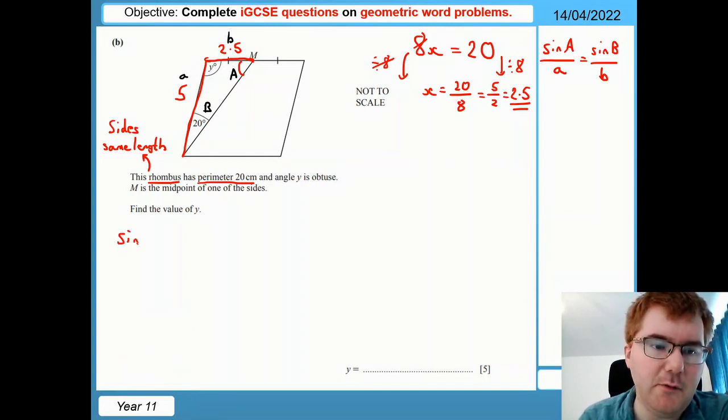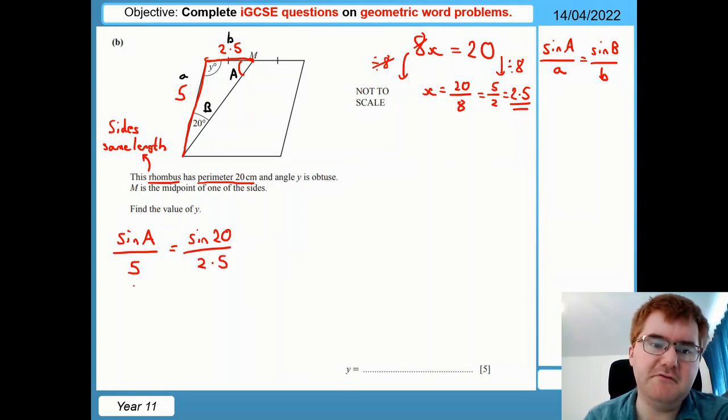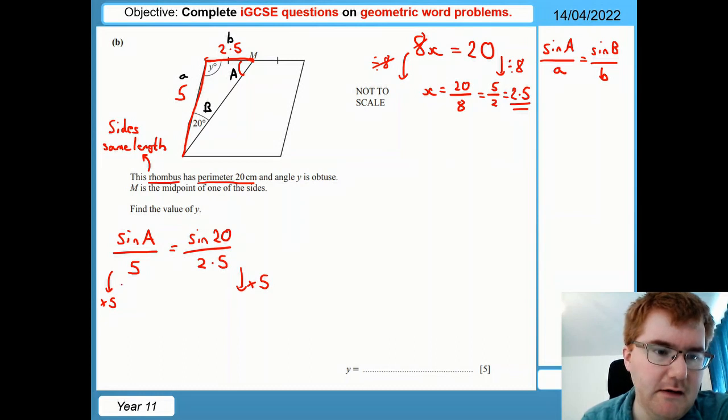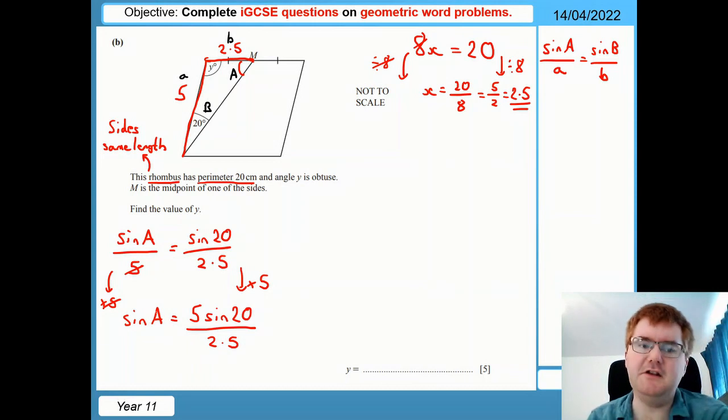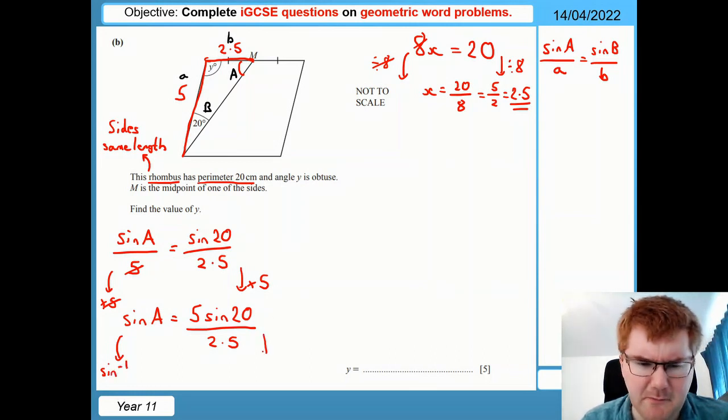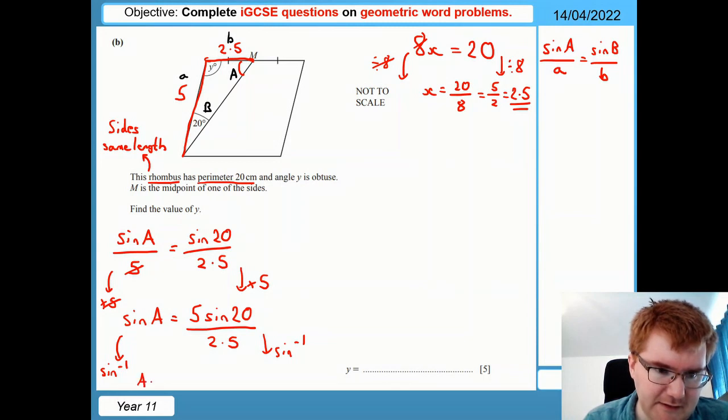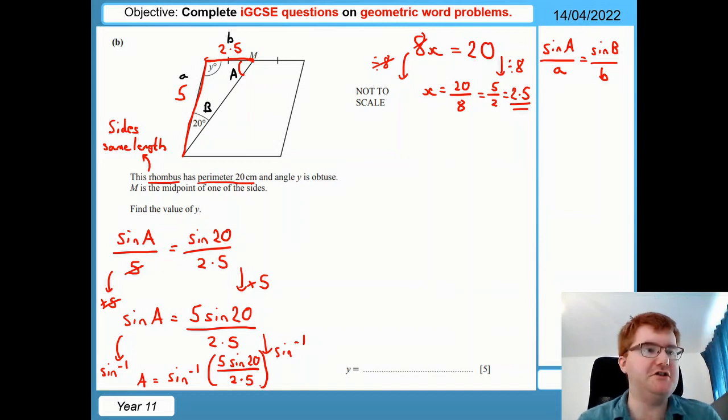And we're just going to pop that into our formula. So we get sine A, the thing that we're looking for, divided by 5 is equal to sine of 20 over 2.5. Now, we want to get rid of the fraction because that's annoying. So what's the opposite of dividing by 5? Well, times by 5 on both sides. So I get sine A is equal to 5 sine 20 over 2.5. And now I need to get A on its own. So what's the opposite of signing something or the inverse sine? Or people often say sine minus 1, which always hurts on the inside. And so we need to do the calculation of A is equal to sine inverse of 5 sine 20 over 2.5.